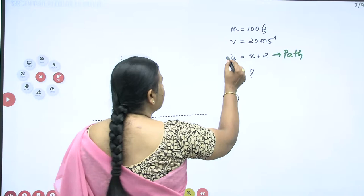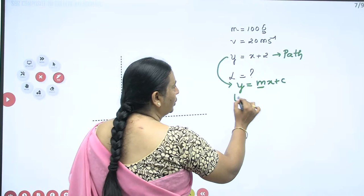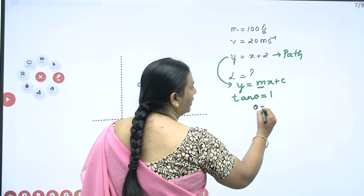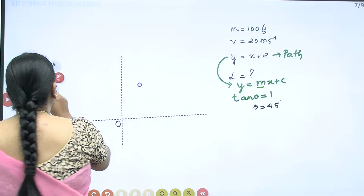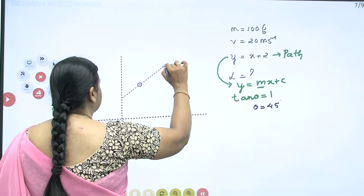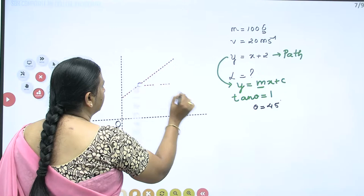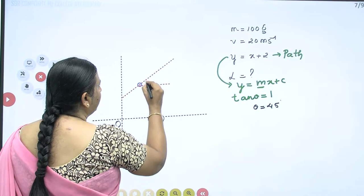I can write this in the y = mx + c form. The slope is 1, which means tan θ = 1, indicating θ = 45 degrees. So the particle is moving at 45 degrees with the x-axis along this path.